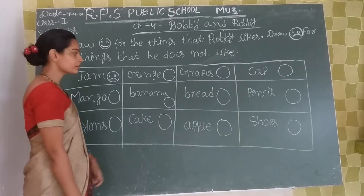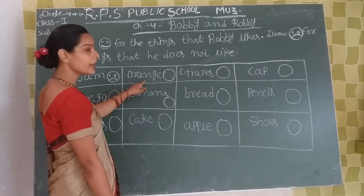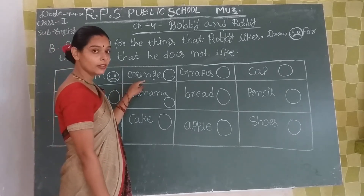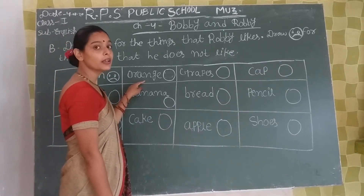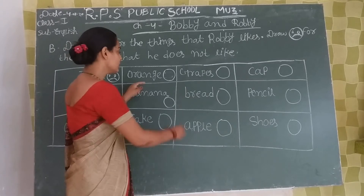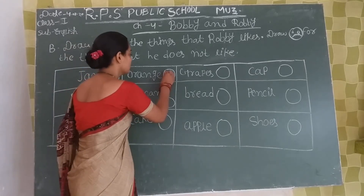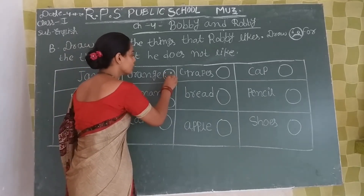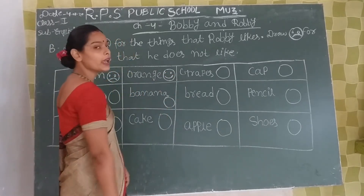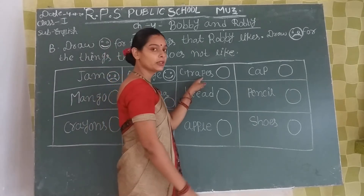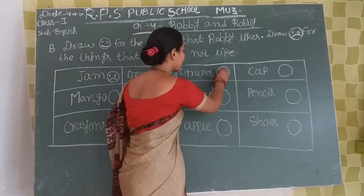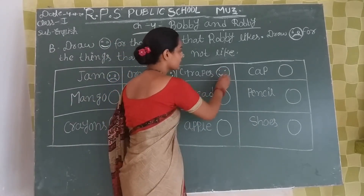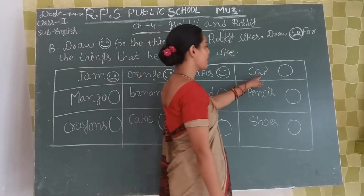Okay. Orange — Robbie likes orange, so we'll make laughing mouth. Grass — Robbie likes grass.